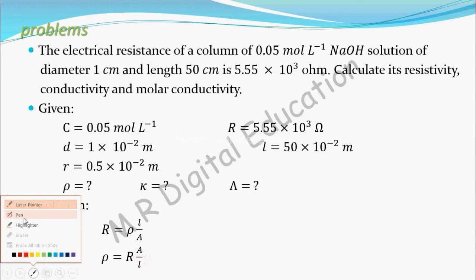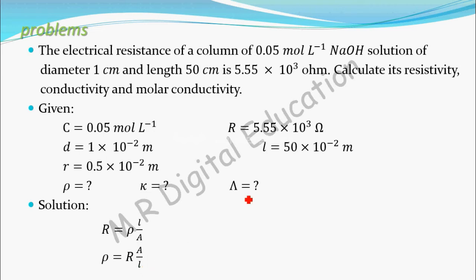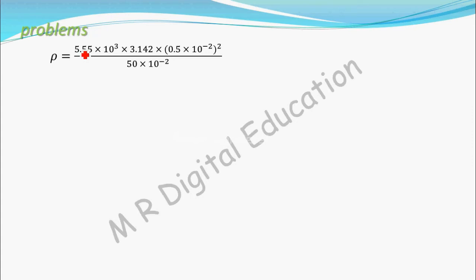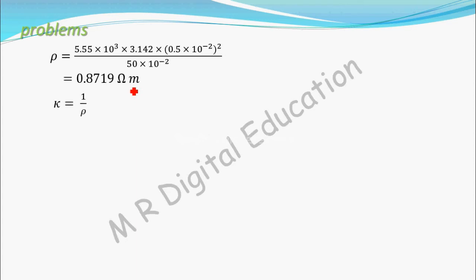Rearranging, rho equals R into A divided by L. Substituting: resistance is 5.55 into 10 to the power 3 ohm, area is pi into (0.5 into 10 to the power minus 2) squared, that is 3.142 into (0.5 into 10 to the power minus 2) whole squared, and length is 50 into 10 to the power minus 2 meter. Upon simplification, you will get resistivity as 0.8719 ohm meter. The unit of resistivity is ohm meter.